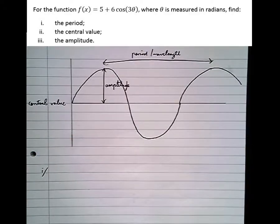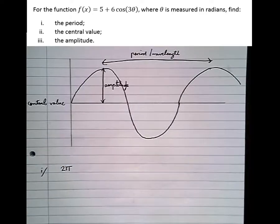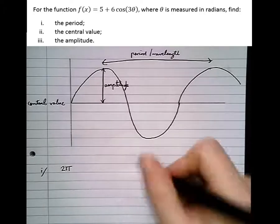Well the period normally, in radians, for any trig graph, sine or cos, is 2π. However, notice in this function it's been stretched on the inside by a scale factor of 1/3. We've multiplied it by 3 on the inside of the bracket. That's a stretch by scale factor 1/3.